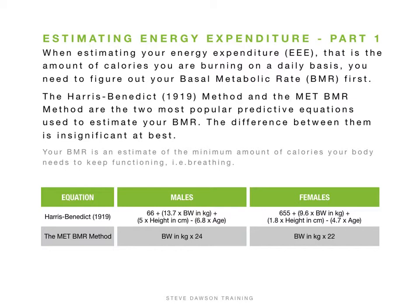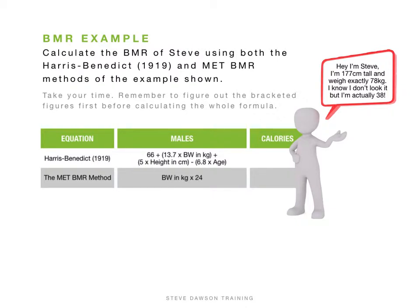The Harris-Benedict method is a long-winded way of coming up with a number, and the numbers differ for males and females so you need to use the correct one. The MET BMR method is much easier — all you really need is your weight and it's very simple. We're going to use both methods with a worked example — that's me, roughly 177 cm tall, 78 kg, and 38 years old.